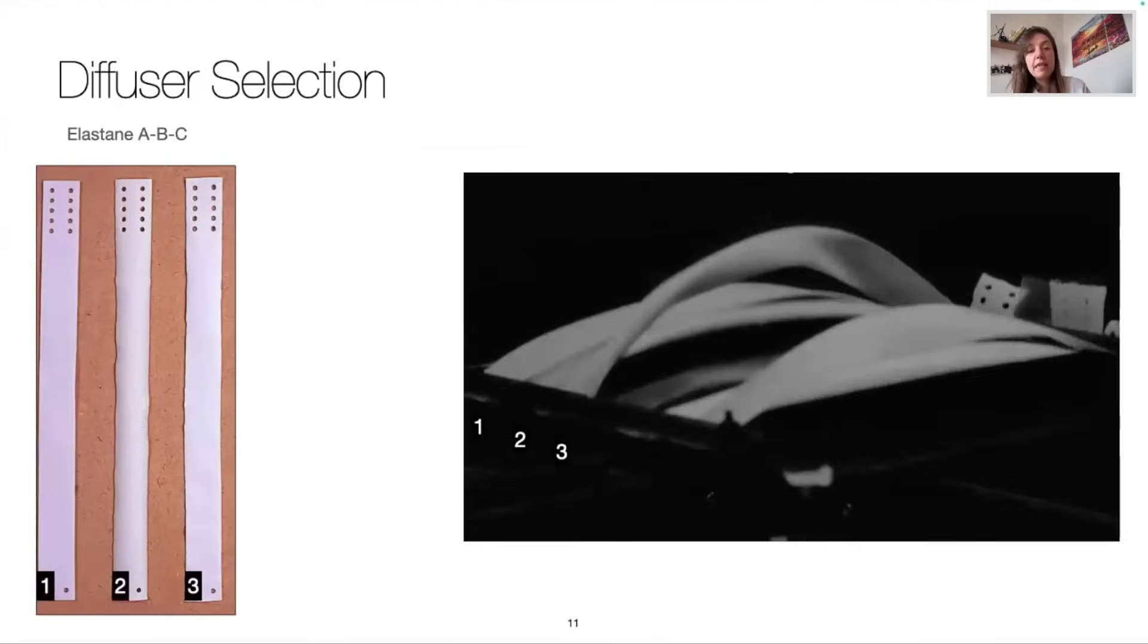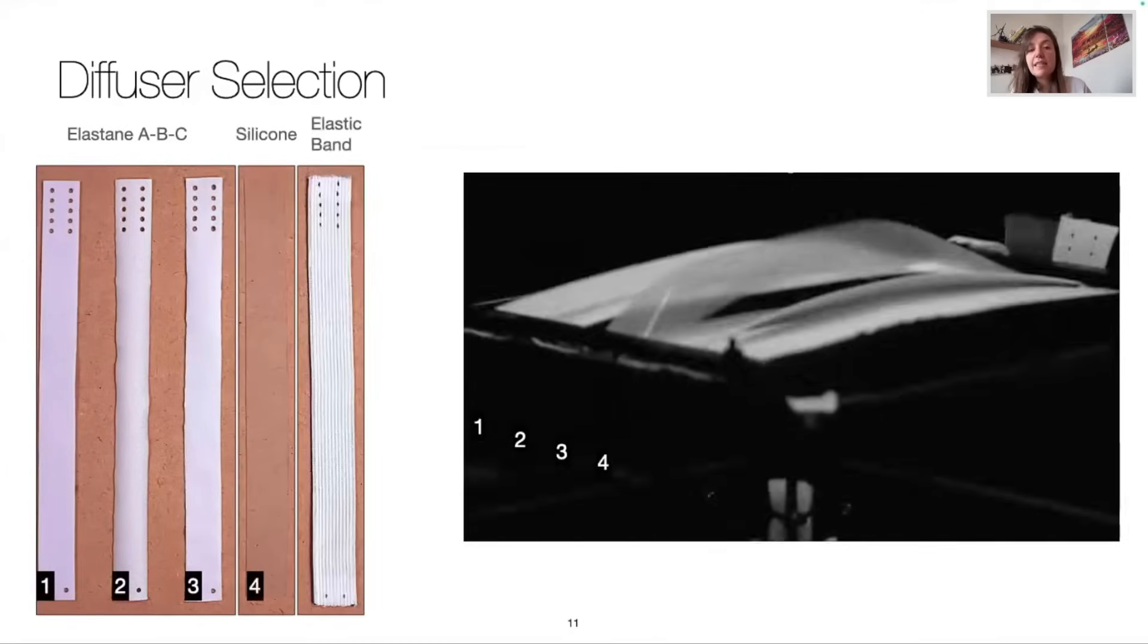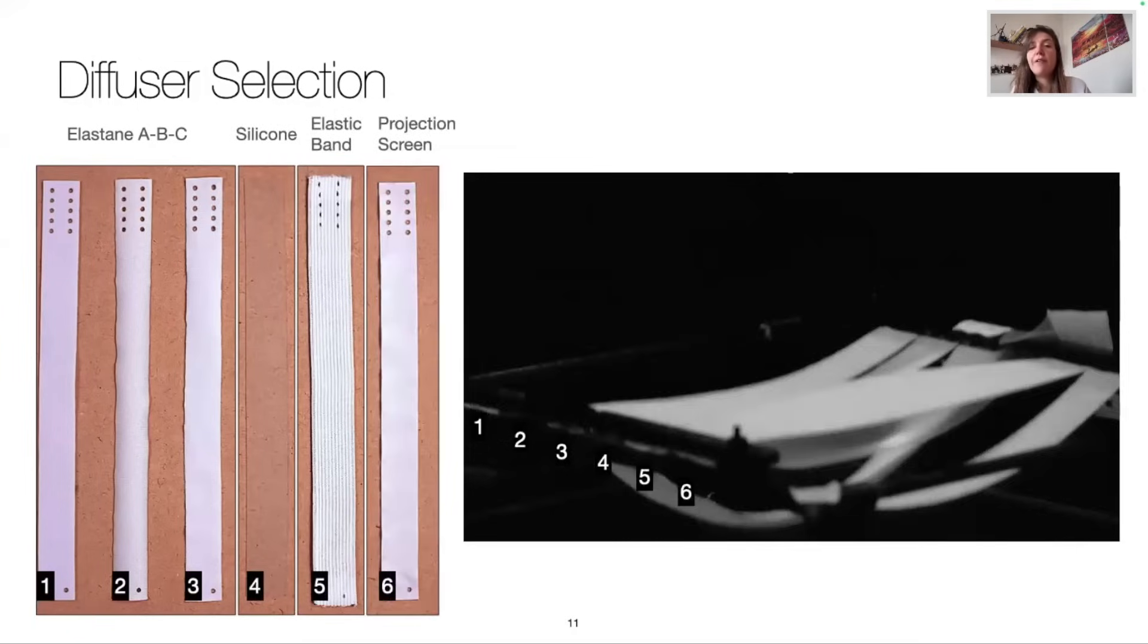So we preselected 6 materials: three different types of elastane, silicone, elastic bands, and finally a classic projection screen fabric.